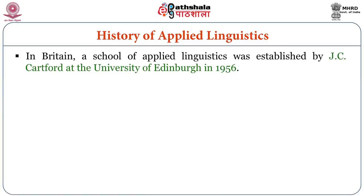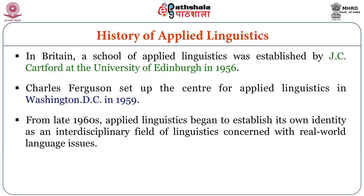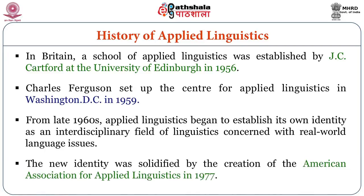In Britain, a school of applied linguistics was established by J.C. Cartford at the University of Edinburgh in 1956. Charles Ferguson set up the Center for Applied Linguistics in Washington DC in 1959. From the late 1960s, applied linguistics began to establish its own identity as an interdisciplinary field concerned with real-world language issues. This new identity was solidified by the creation of the American Association for Applied Linguistics in 1977.